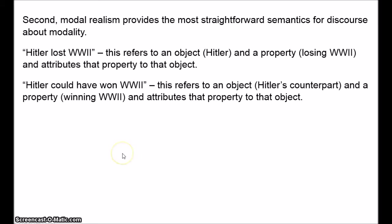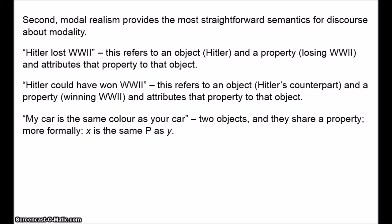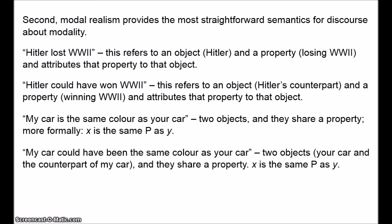Take a more complex example. I think this example was given by John Divers in his book Possible Worlds. Take the non-modal statement: my car is the same colour as your car. This is saying that there are two objects and these objects share a certain property. We might put it more formally as: X is the same P as Y. Now take the corresponding modal statement: my car could have been the same colour as your car. We can explain the truth conditions in essentially the same way as before. There are two objects — one of which is your car, and the other is a counterpart of my car — and these objects share the same property. We have, as before, X is the same P as Y, where X is the counterpart of my car.